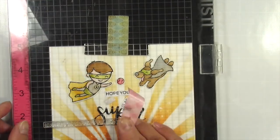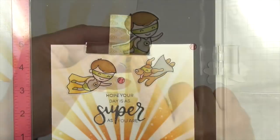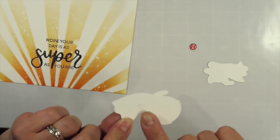I secure the super die to the panel before stamping so I know exactly where to stamp around the letter P.